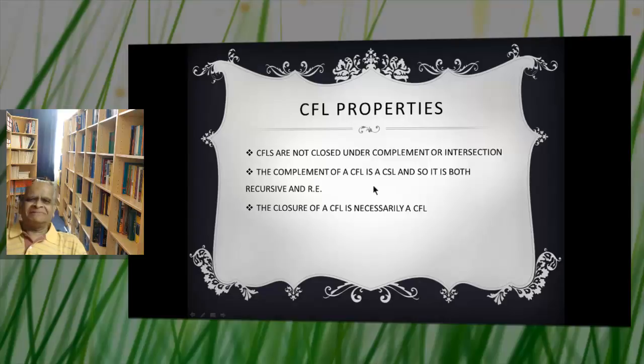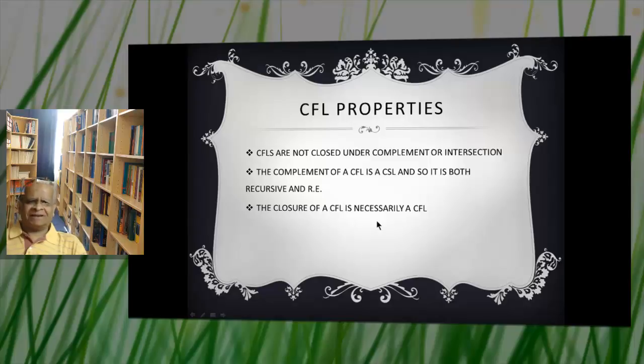The complement of a CFL is a CSL, but however a CFL and CSL are both recursive and recursively enumerable. The closure of a CFL is not necessarily a CFL. Let us see where a complement of a context-free language occurs. It occurs here L2 complement.